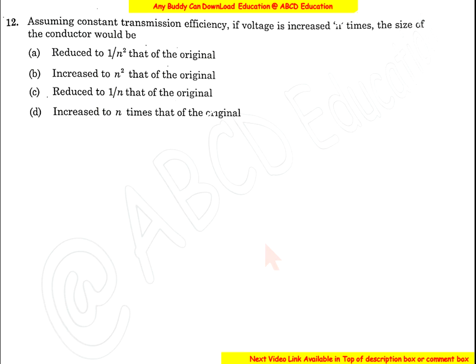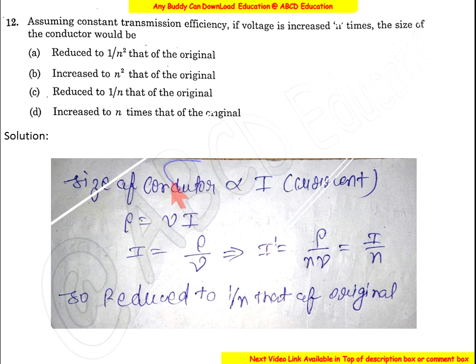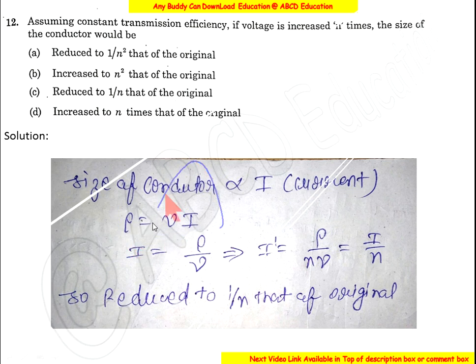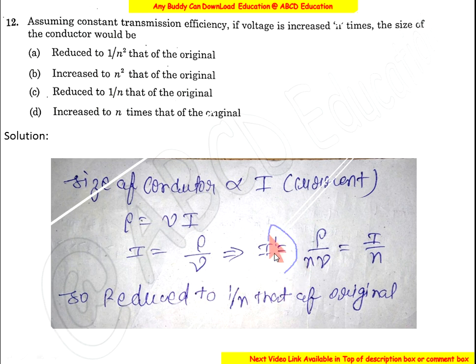Question 12: Assuming constant transmission efficiency, if the voltage increases N times, the size of the conductor changes as follows. The size of the conductor is directly proportional to current. Since current equals P/V, if voltage increases N times, the current decreases by 1/N times, so the conductor size also decreases by 1/N².